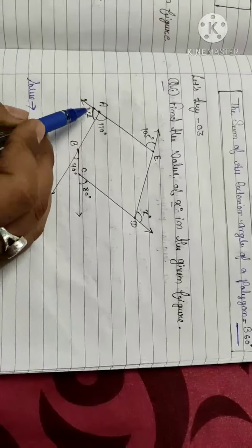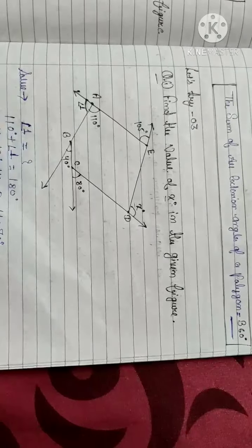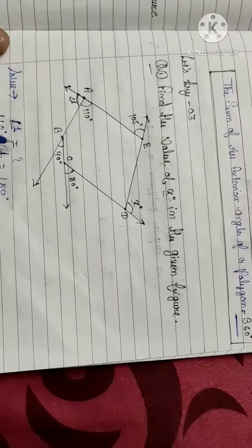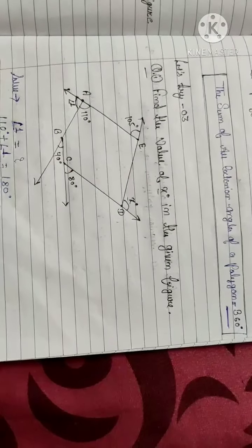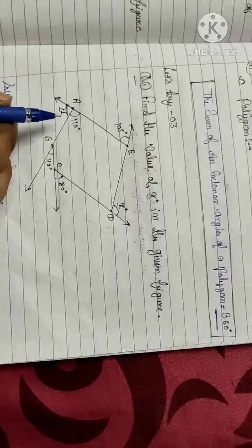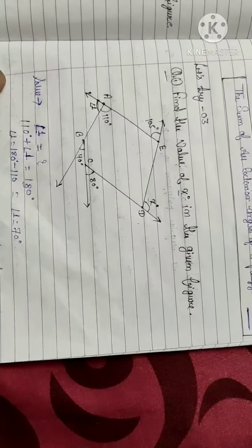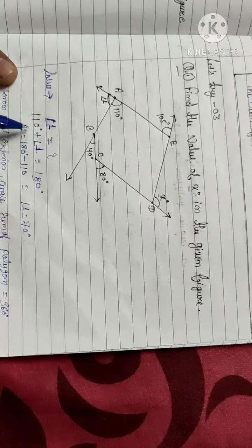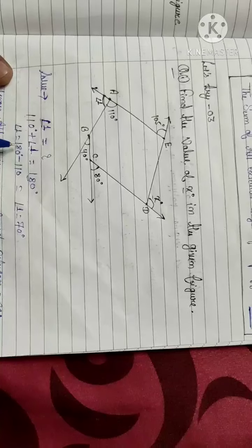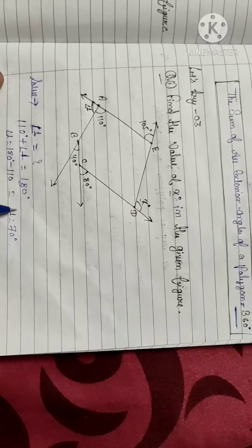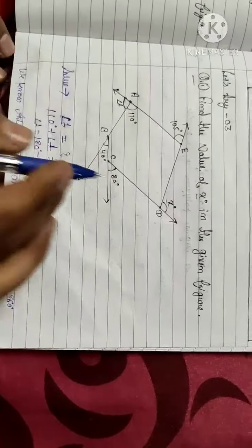Angle 1 lies on a straight line, so 110 degrees plus angle 1 equals 180 degrees. Therefore angle 1 equals 180 minus 110, which gives us angle 1.